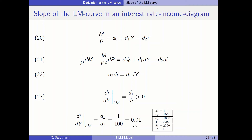We have now derived one key characteristic of the LM relationship: the LM curve is upward sloping with a positive slope. In the next step, we examine what factors cause a shift of the LM curve — which variables, when they change, will shift the LM curve and in which direction.